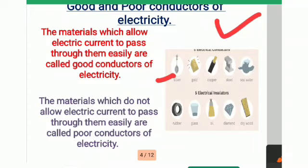The materials which do not allow electric current to pass through them easily are called poor conductors of electricity. For example: rubber, glass, oil, diamond, dry wood, etc.